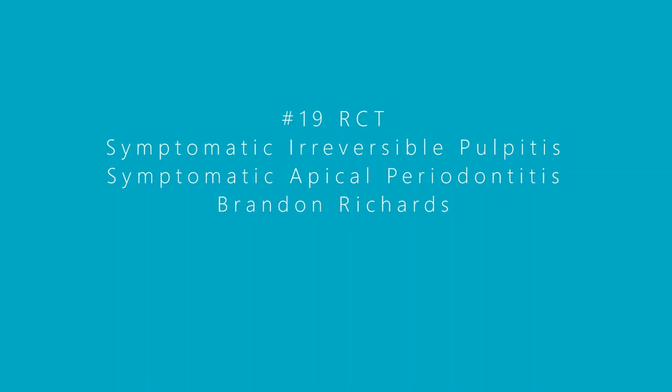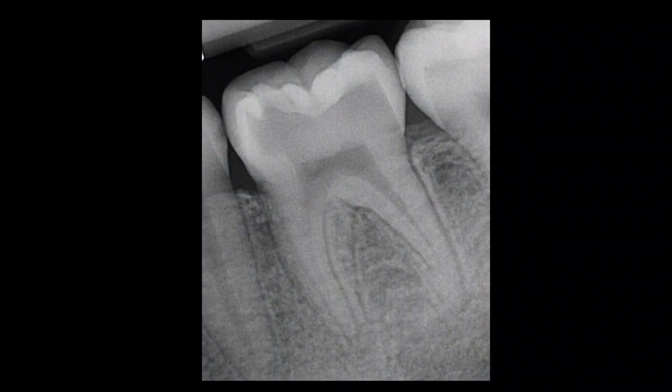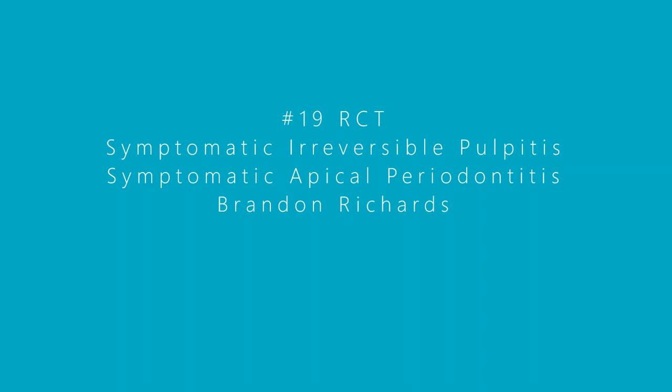Today's case is tooth number 19. It was diagnosed with symptomatic irreversible pulpitis and symptomatic apical periodontitis. Looking at the pre-op radiograph, we're seeing very extensive occlusal caries that extend to the pulp chamber. We also see some widening of the PDL ligament.